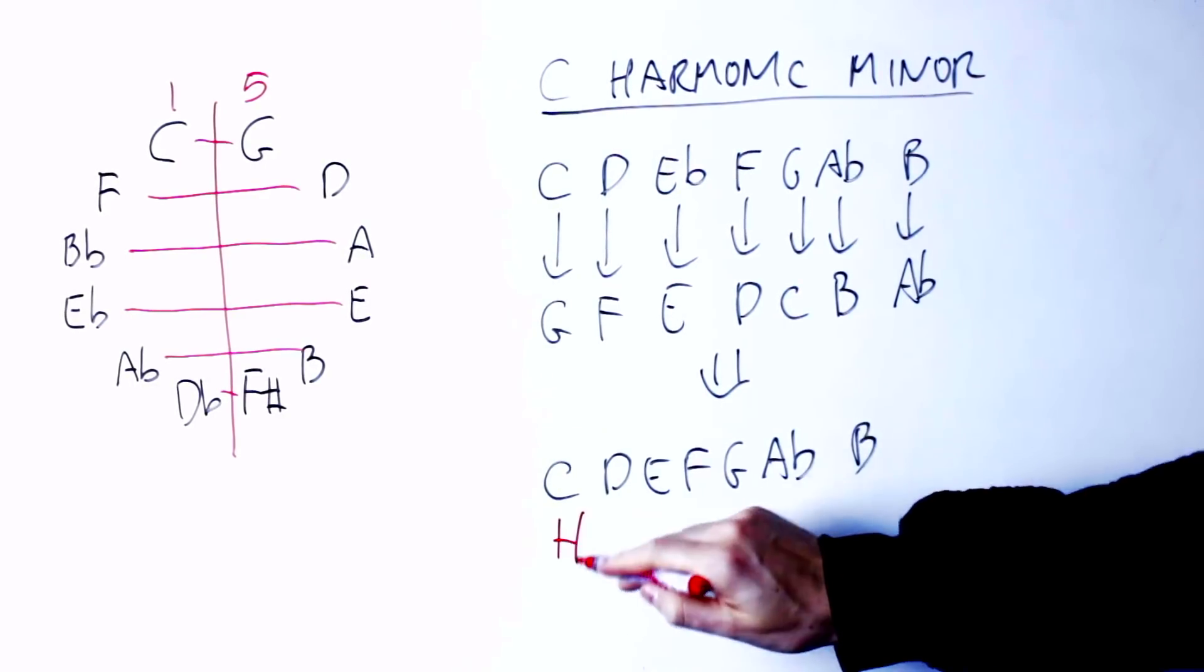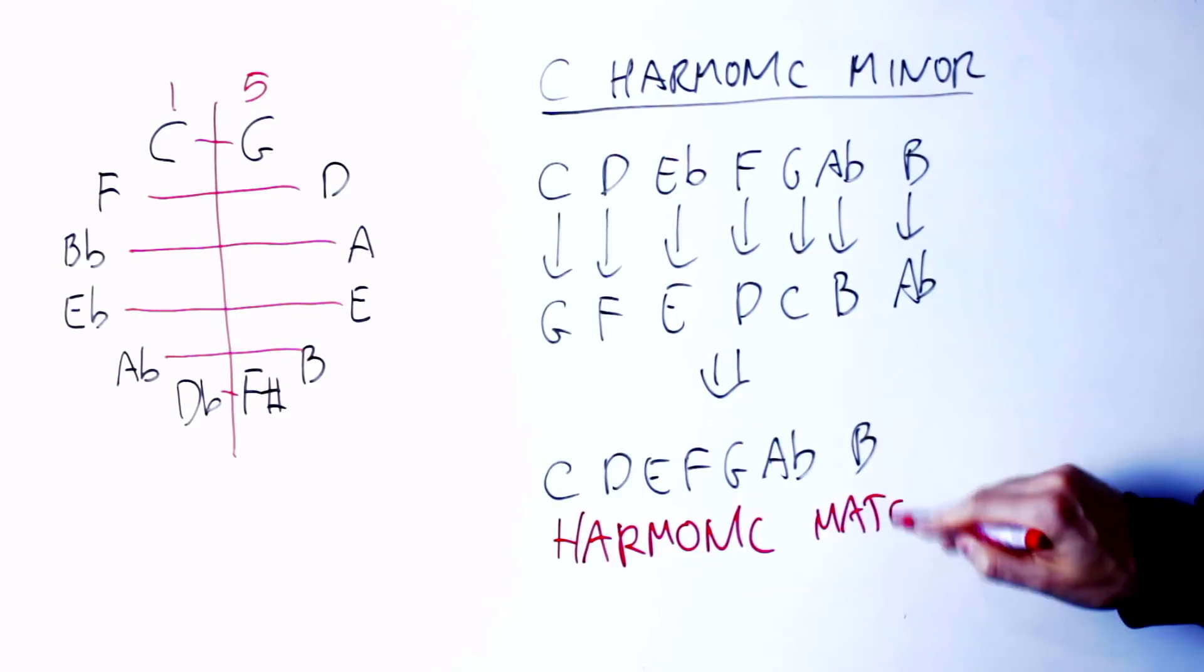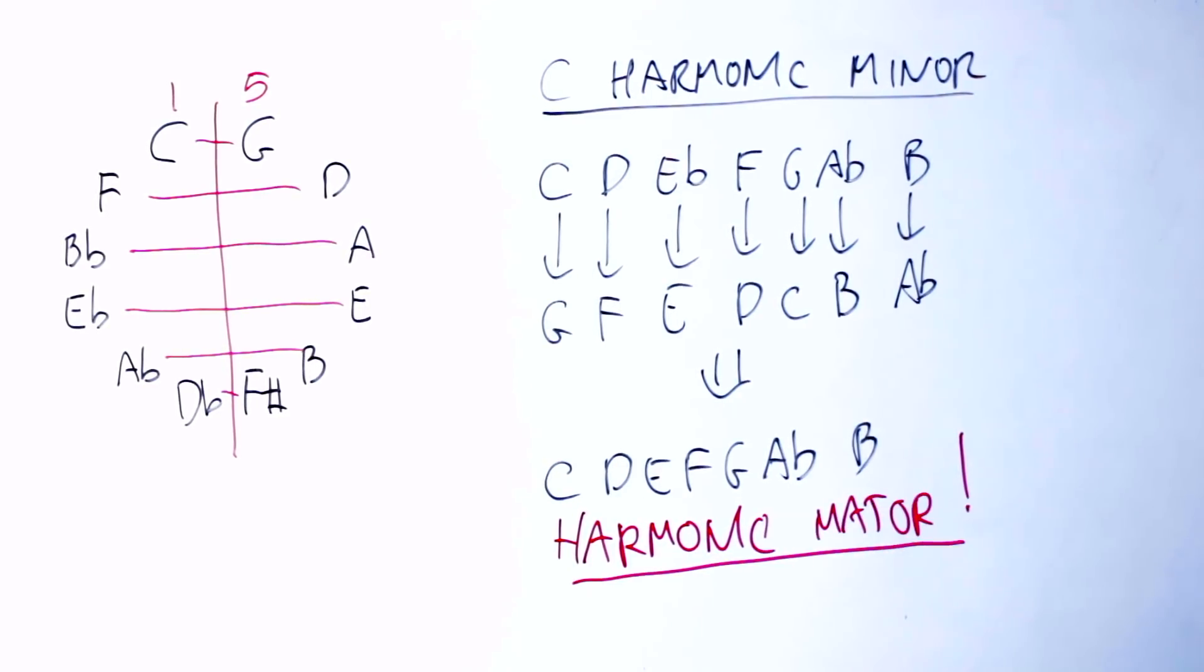If we reorder notes starting from C, our scale is C, D, E, F, G, A flat, B. This is a known scale, it's not something completely new, and in fact it's called the C harmonic major scale.